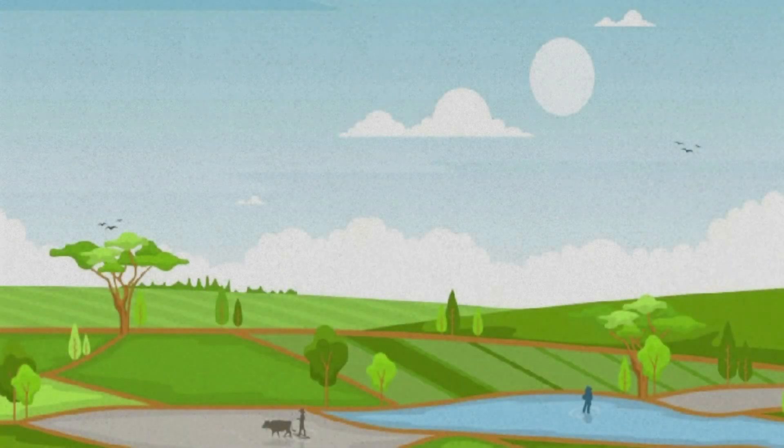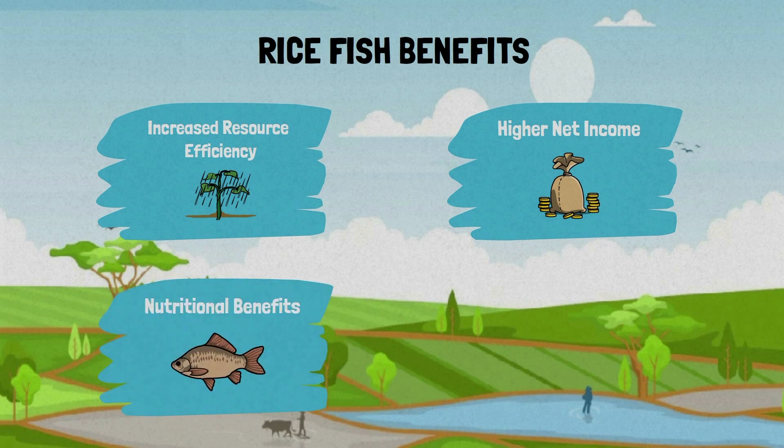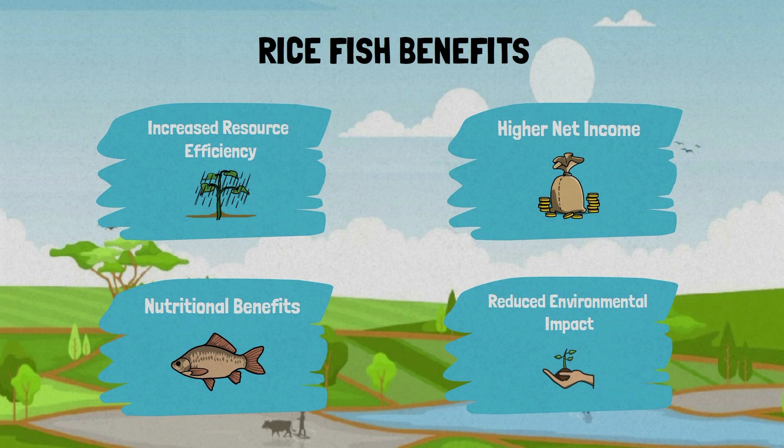Rice fish systems provide farmers with a number of key benefits in comparison to monocropping. These include increased resource efficiency, higher net income, greater nutritional benefits, and a reduction in negative environmental impacts due to a reduced requirement for fertilizer input.